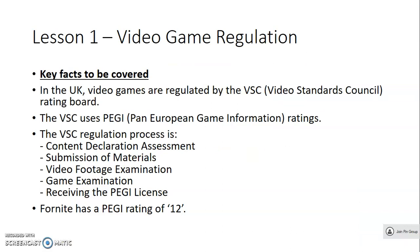That brings us to the end of lesson one. You should now know everything you need to know about video game regulation. The key facts we've covered — which you will find in your fact sheet — are: in the UK, video games are regulated by the VSC, the Video Standards Council Rating Board. The VSC uses PEGI, Pan-European Game Information ratings. The VSC regulation process is: Content Declaration Assessment, Submission of Materials, Video Footage Examination, Game Examination, and Receiving the PEGI License. Finally, Fortnite has a PEGI rating of 12, and you should know the reasons why. Any questions, please speak to me in the chat or email dlakins at johnfernley.org. Thank you very much and I will speak to you in the next lesson.